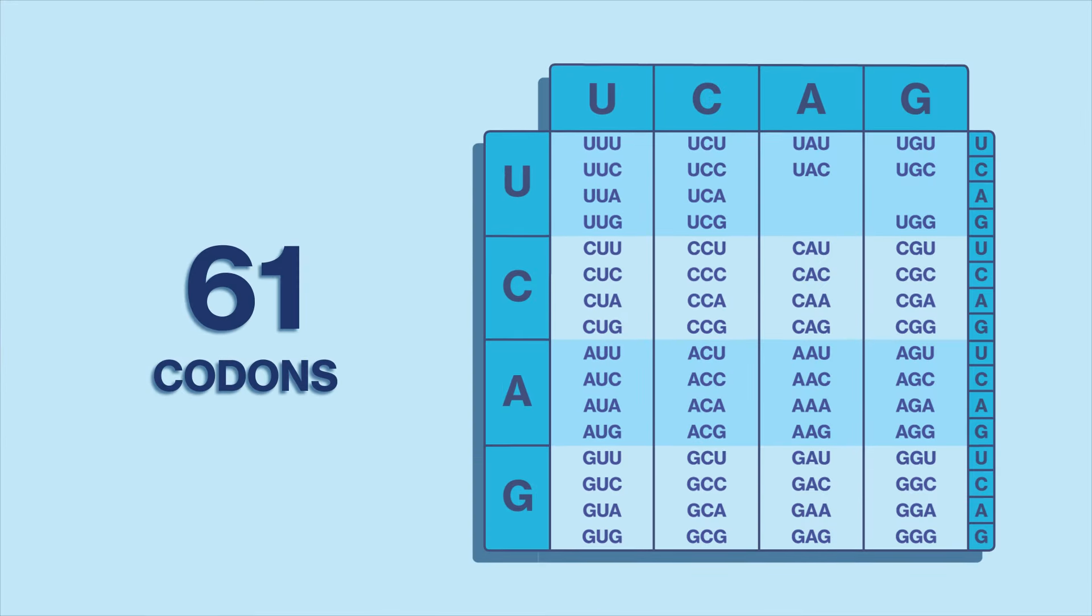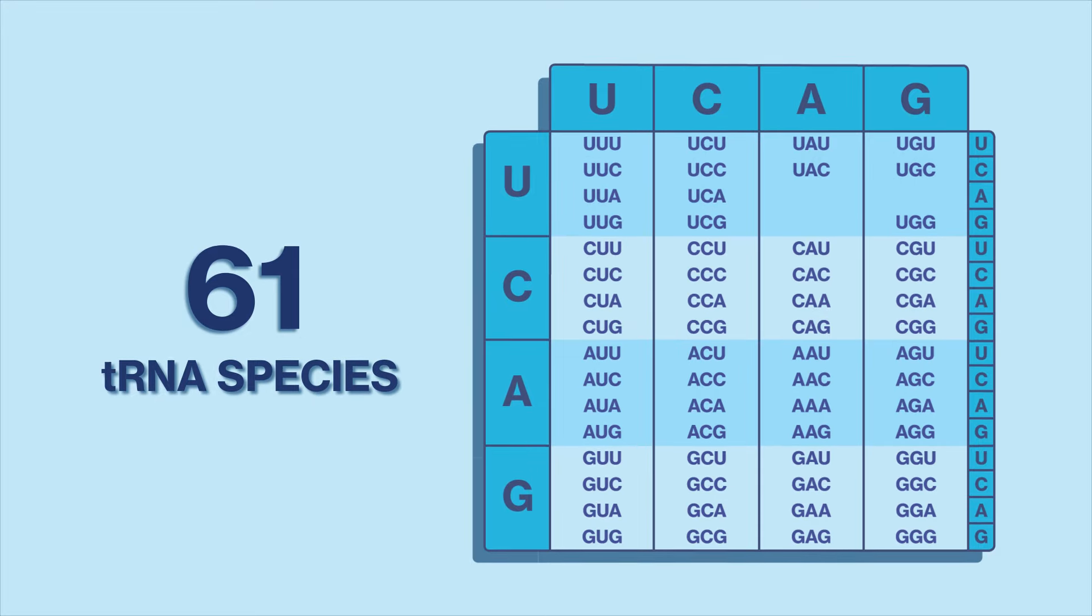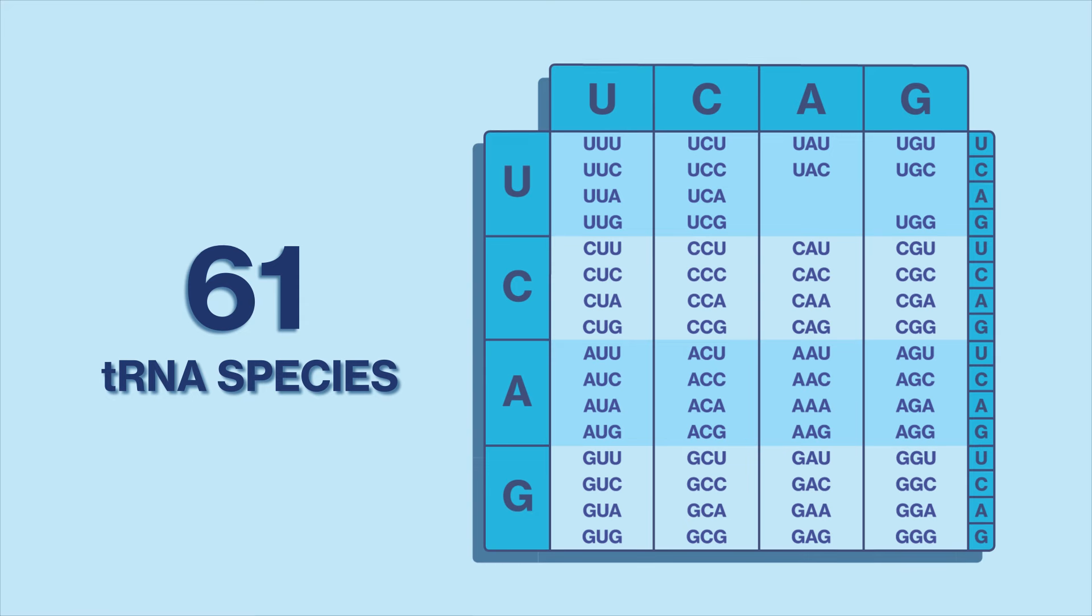Not all codons and tRNAs are created equal. With 61 codons specifying amino acids in the genetic code, it makes sense for each cell to have 61 tRNA species, one for each codon. However, most cells have far fewer tRNA species.